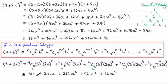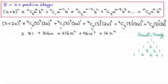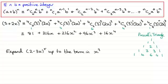I've got a question here which I would strongly encourage you to have a look at: Expand (2 − 3x) to the power 5, up to the term in x cubed. I'll give you a moment to do this — if you'd like to pause the video, come back when ready and check your work against my solution.